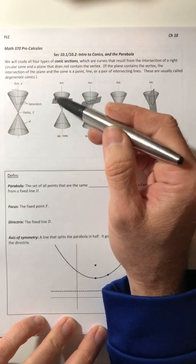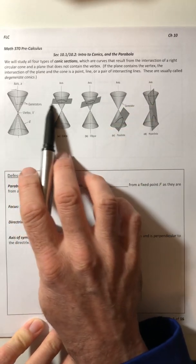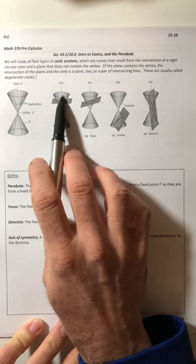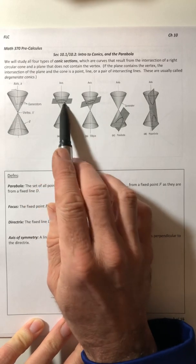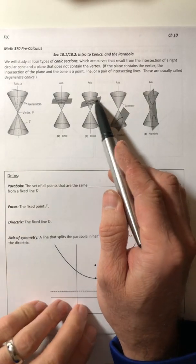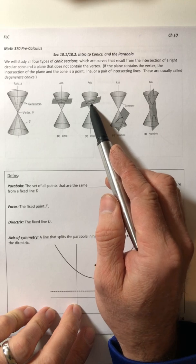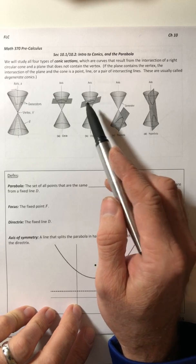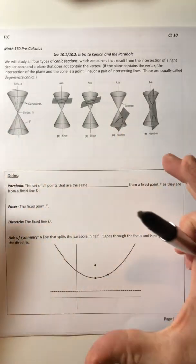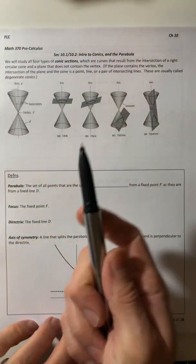So if you take a cone and you just go straight on through it parallel to the base, you end up with the graph of a circle. If you tilt it and still go through the cone, you get an ellipse. So an ellipse is just a stretched out circle, either width-wise or length-wise. It's an oval.